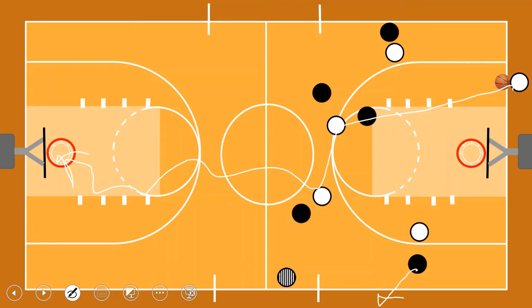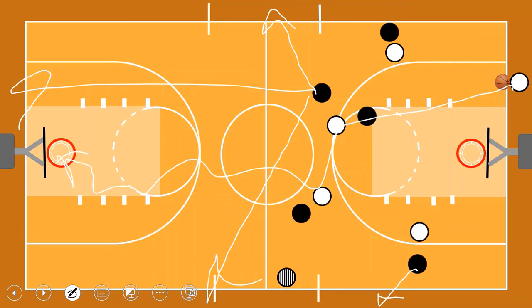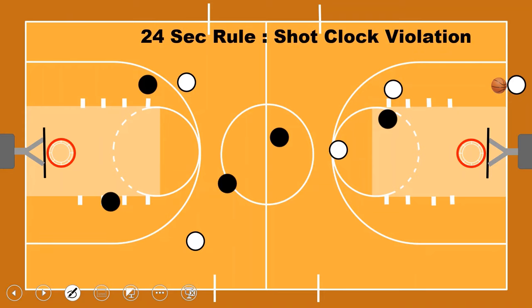Once you score, the ball is given to your opponent, who will try to pass and move towards their basket. Anytime the ball goes out of bounds — if your player threw it out — the ball goes to your opponent. If your team commits a violation, the ball goes to the opponent. If the opposing team commits the violation, the ball comes to you. So violations are very important.